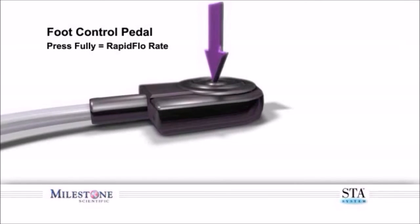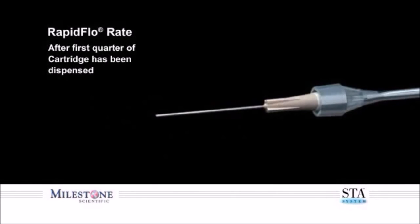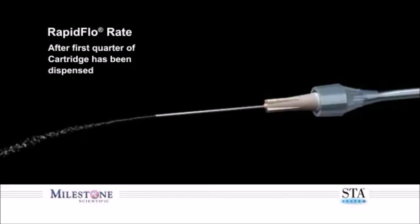It is important to remember that rapid flow is used during superperiosteal buccal infiltration injections or mandibular blocks only after the first quarter cartridge has been dispensed and the patient has acknowledged that they have soft tissue anesthesia of the area being injected.